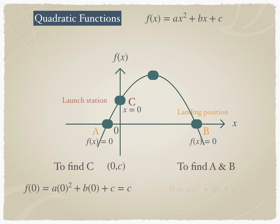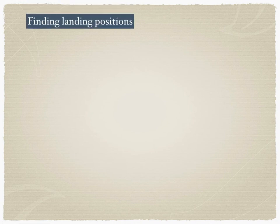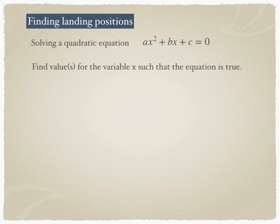To find landing positions a and b, we set f of x equal to zero and solve the quadratic equation ax squared plus bx plus c equals zero. For the highest position, it is the midpoint between a and b. Finding the landing positions is the same as solving a quadratic equation — finding values for x such that the equation is true.